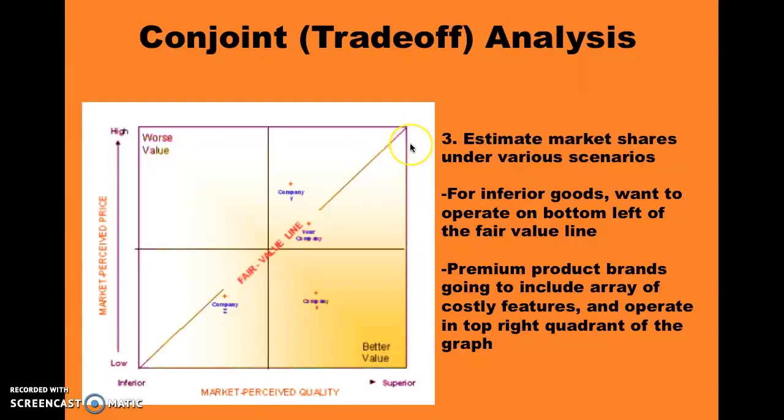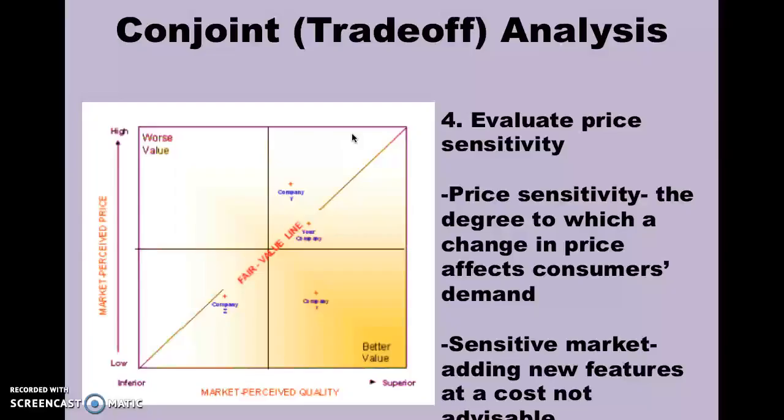An important aspect of conjoint trade-off analysis is evaluating price sensitivity. A very price-sensitive market is likely going to drop off their amount of purchases for a small change in price. Somebody with a very price-sensitive market should likely consider not adding any expensive features.